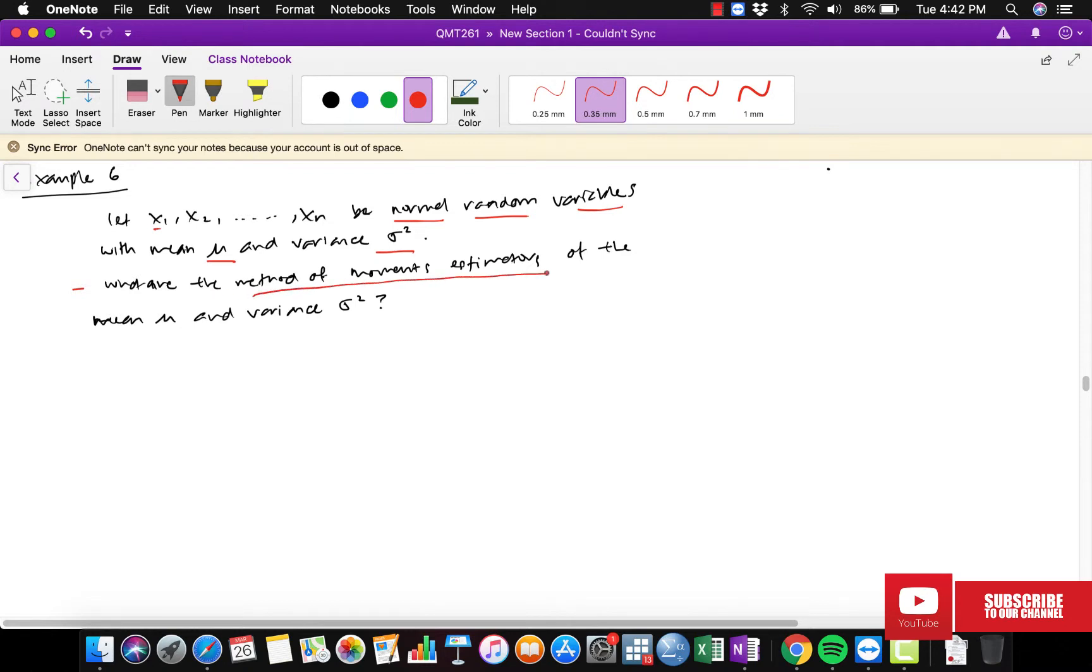So the question is: what are the method of moment estimators of the mean and the variance sigma squared? Now we know that from prior knowledge...